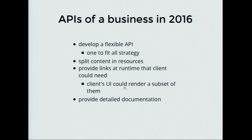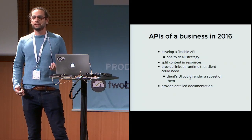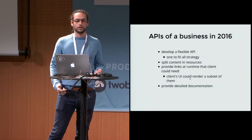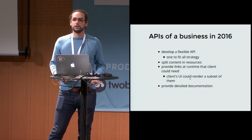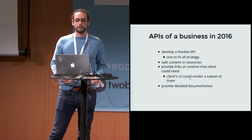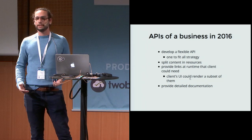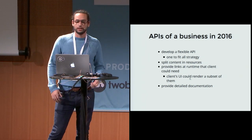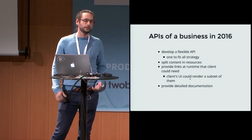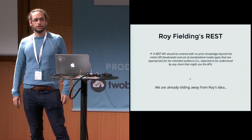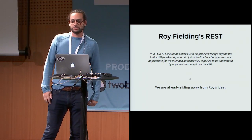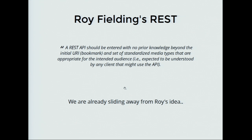But in practice, building an API in 2016, we don't actually do that because we don't know beforehand what the client will need. In order to facilitate the client asking for exactly what's needed, we follow a different process. We try to develop a very flexible API, split the contents into resources, provide links and hypermedia at runtime, and give detailed documentation — and that documentation is what we want to remove from this flow. We've already slid away from Roy's initial model, and we shouldn't feel guilty — we don't have the resources to build a true REST API, and maybe that's not exactly what we should do.